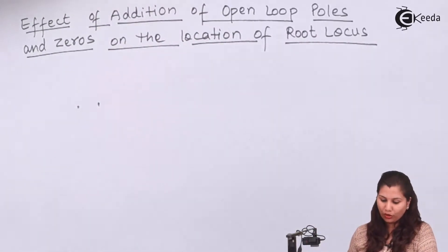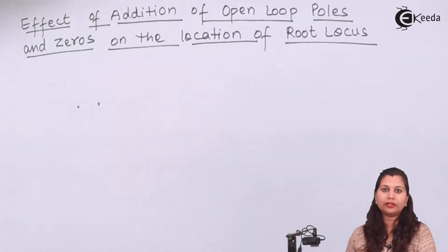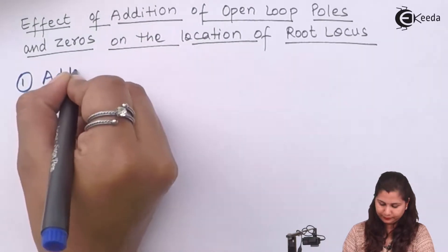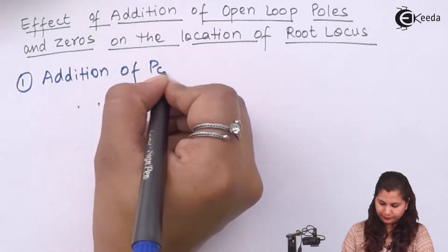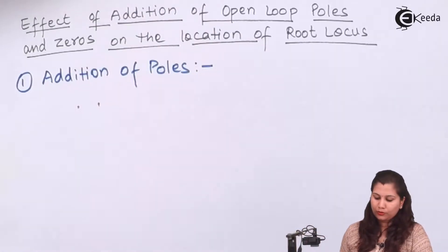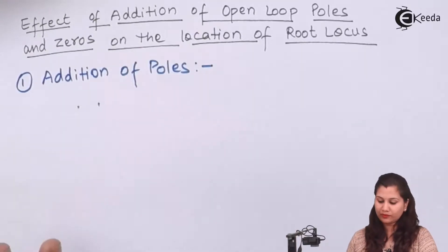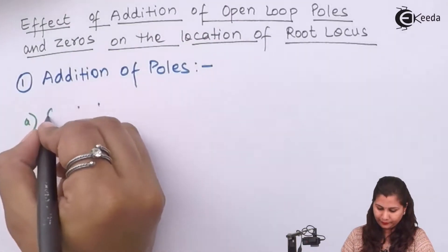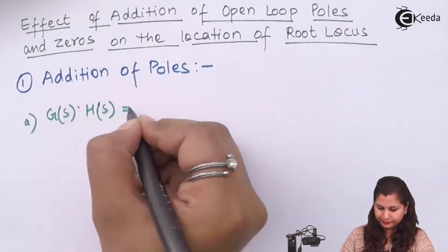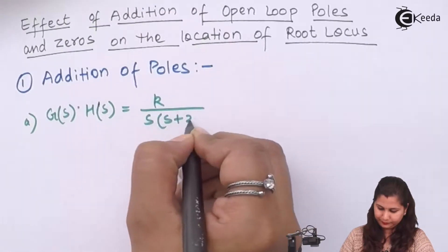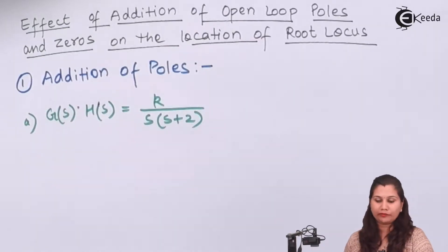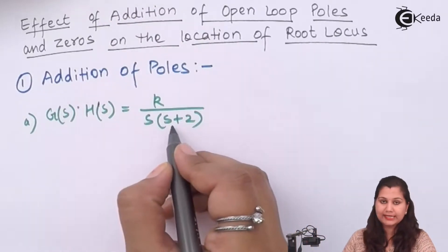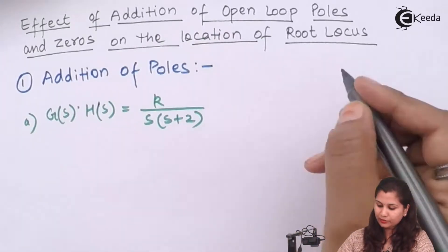First let's see what will be the effect of addition of open loop poles on the location of the root locus. To see the effect, we will take an example so that we can easily understand it. We have taken an open loop transfer function given as K upon s(s+2), so its poles are s equals to 0 and s equals to minus 2. Let's draw the root locus for this.